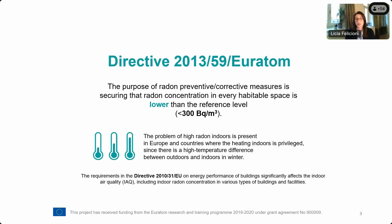Radon concentration indoors in buildings is regulated by Directive 2013-59 EURATOM, which established that indoor concentration must be below the reference level of 300 Bq per cubic meter. In cases where indoor radon concentration is above that level, mitigation and corrective measures must be implemented in the building. This problem of high indoor radon is present mostly in Europe and in countries such as Canada, where spending time indoors is common and the temperature difference between outdoors and indoors is very high.